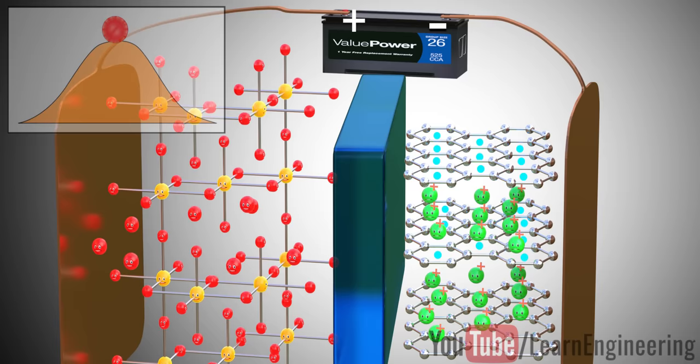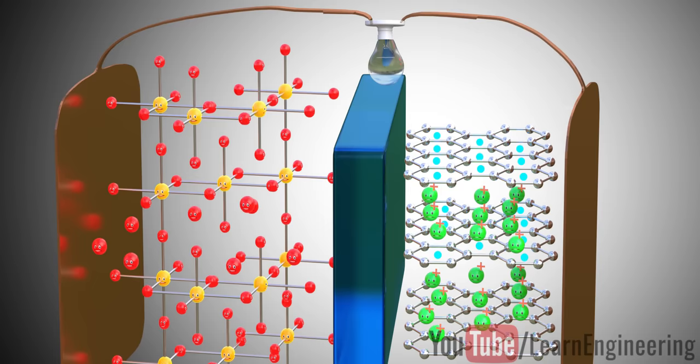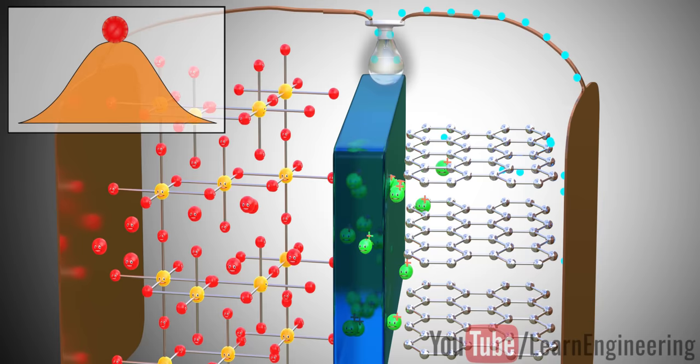As soon as the power source is removed and a load is connected, the lithium-ions want to go back to their stable state as a part of the metal oxide. Due to this tendency, the lithium-ions move through the electrolyte and electrons via the load, just like sliding down a hill. Thus, we get an electrical current through the load.